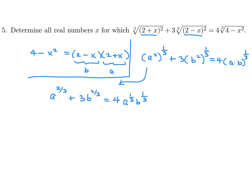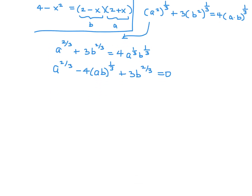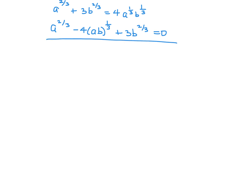Let's put everything on one side. We have a^(2/3) minus 4a^(1/3)·b^(1/3) plus 3b^(2/3) equals 0. I'm going to break this up: a^(2/3) − 4·a^(1/3)·b^(1/3) + 3·(b^(1/3))² equals zero. And I think at this point I can factor it.